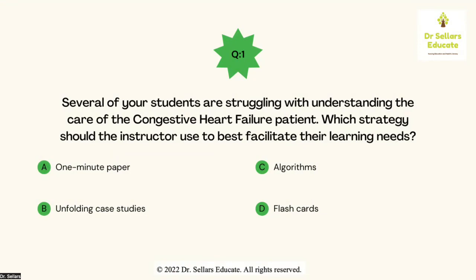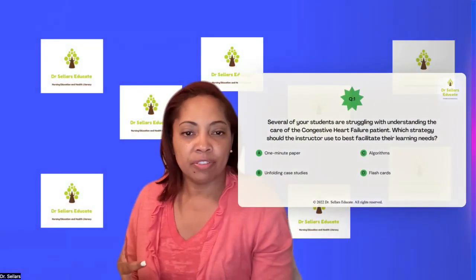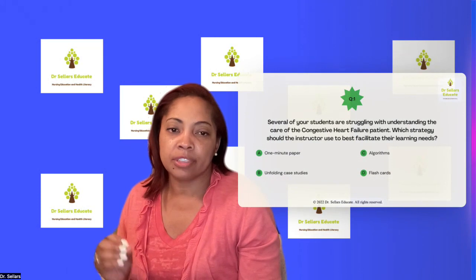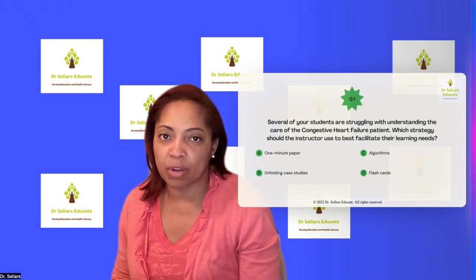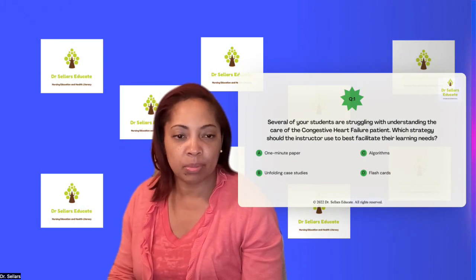Let's talk about why the other three options are not correct. The one-minute paper is a great reflective activity — it allows students to reflect on a specific concept or a policy and procedure they've implemented in their clinical setting, but it doesn't facilitate learning in the way that we're interacting with the student to help them clarify their muddy points. An algorithm is more associated with a process we follow based on patient presentation, so that's not the best answer. Flashcards are an independent activity — they don't involve us interacting with the student. Unfolding Case Studies are a great way to facilitate learning, to engage in a conversation with students about the rationale for making decisions every step of the way. It truly does unfold and present facts as we go down the pathway of learning with our student.